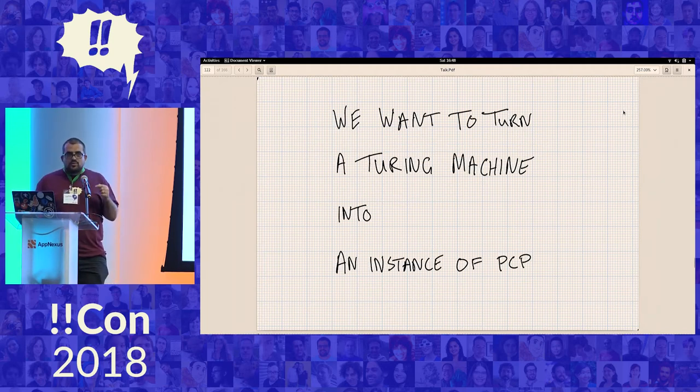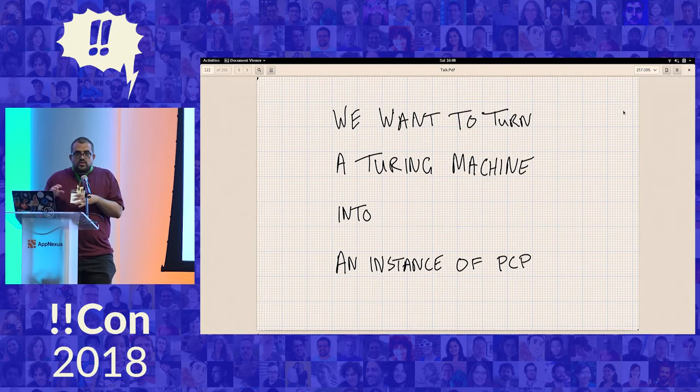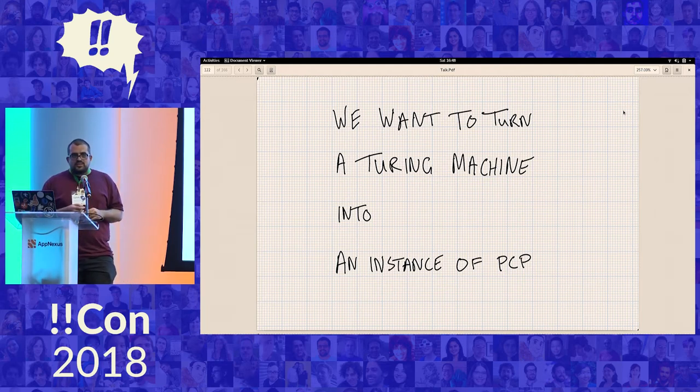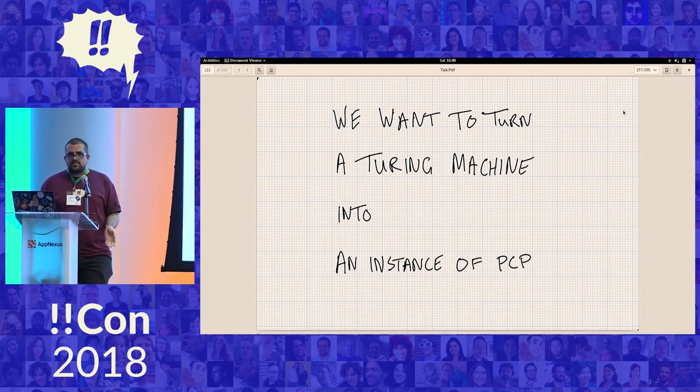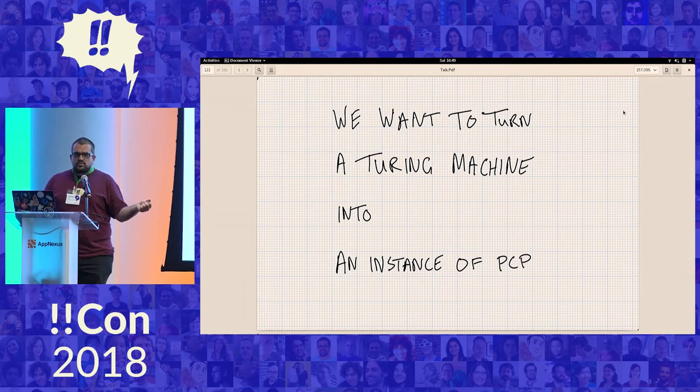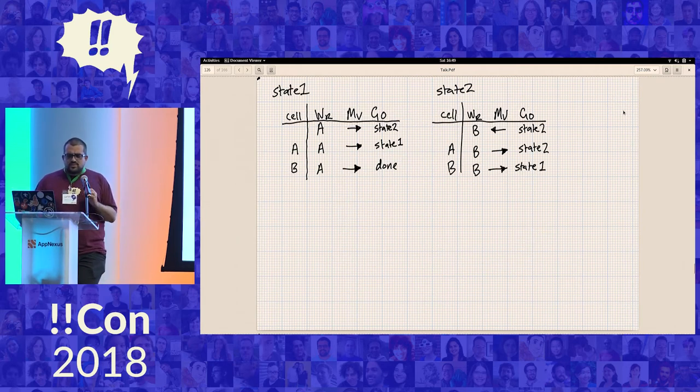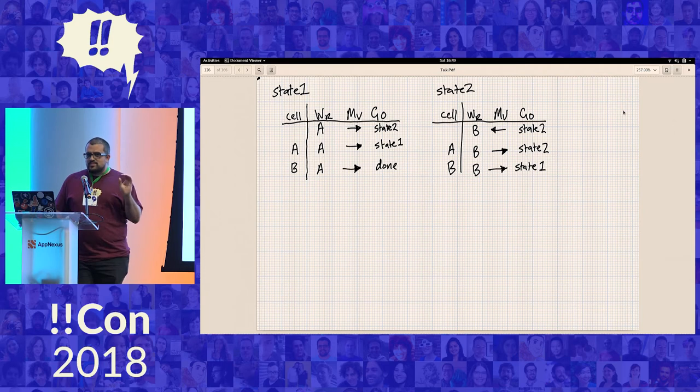So the way we're going to show that the post correspondence problem is also impossible to solve is by doing something called a reduction. I just like to think of it as not letting some impossibility sneak in the back door. So suppose we could solve the post correspondence problem. Well, we're going to find a way to turn a Turing machine into a post correspondence problem. So that if we could solve the post correspondence problem, we could decide if the Turing machine was going to halt or not. So we want to turn a program into a puzzle. This is curious, but kind of cool.